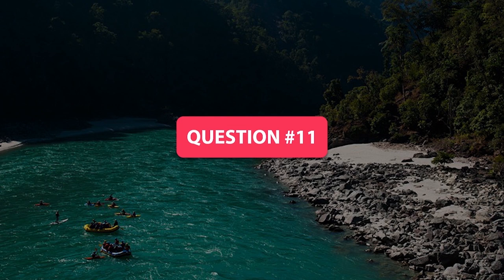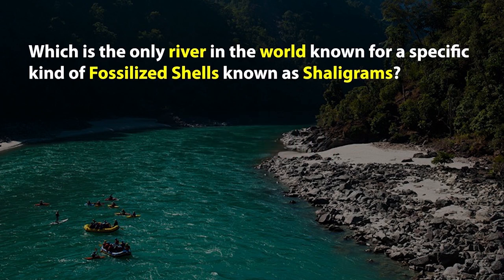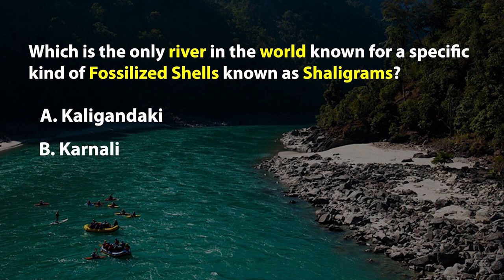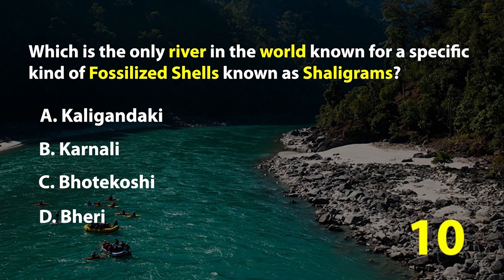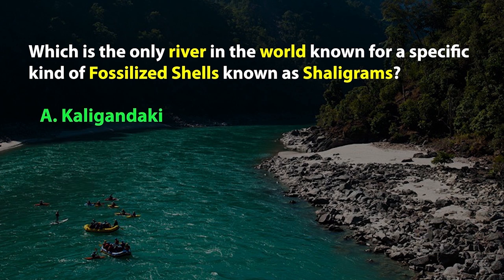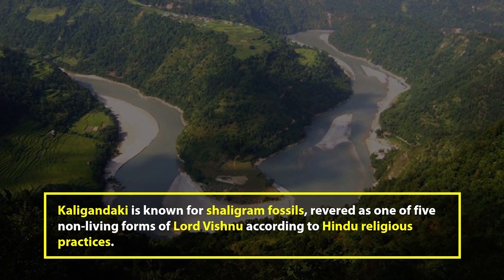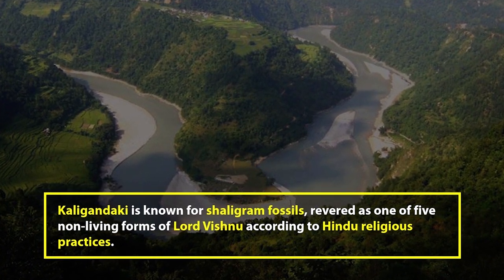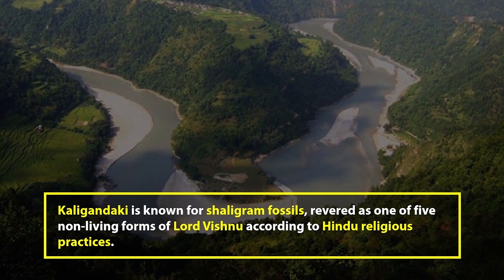Question number 11. Which is the only river in the world known for a specific kind of fossilized shells known as shaligrams? A. Kaligandaki, B. Karnali, C. Bhote Koshi, or D. Peri. The right answer is A. Kaligandaki is known for shaligram fossils, revered as one of the five non-living forms of Lord Vishnu according to Hindu religious practices.